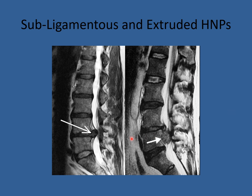There is a difference between disc herniations. Some disc herniations are contained or subligamentous, while others are extruded and have no boundary. Here is a tear through the posterior annulus with a disc herniation, but you'll notice the posterior longitudinal ligament is stretched — this herniation is contained within the posterior longitudinal ligament. Versus this: an irregular ragged piece sitting free-floating in the canal, torn through both the posterior annulus and the posterior longitudinal ligament. This is a free fragment or extruded disc herniation.